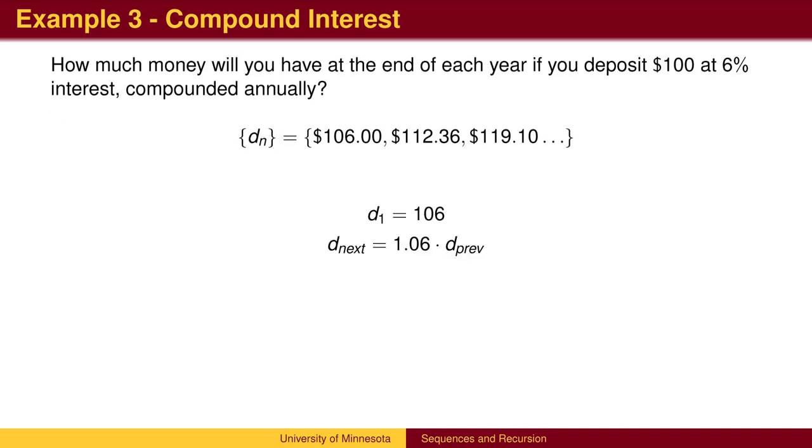We can get the same result by multiplying by 1.06. The 1 represents the fact that we get to keep the money we already have in the bank. The 0.06 represents the interest.